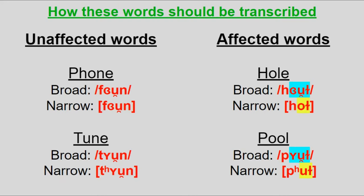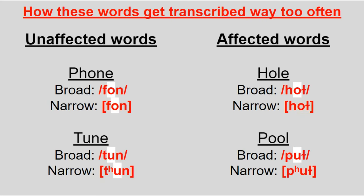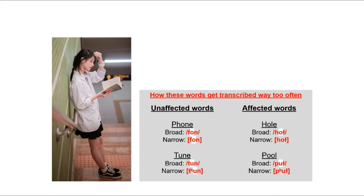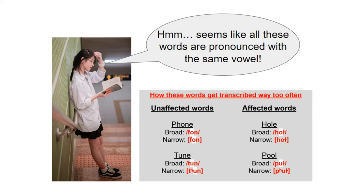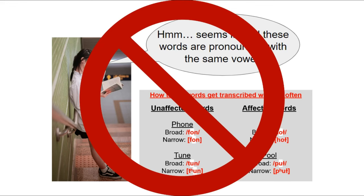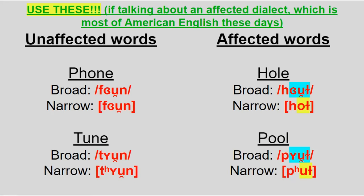Here's how you'd write those words in narrow and broad transcription. The problem is that people just ignore this allophonic distinction all the time, which means that if I hypothetically was an English student reading those transcriptions, I wouldn't be able to see that allophone and I'd stay pronouncing those vowels — namely the phonemes — wrong as phone and tune.